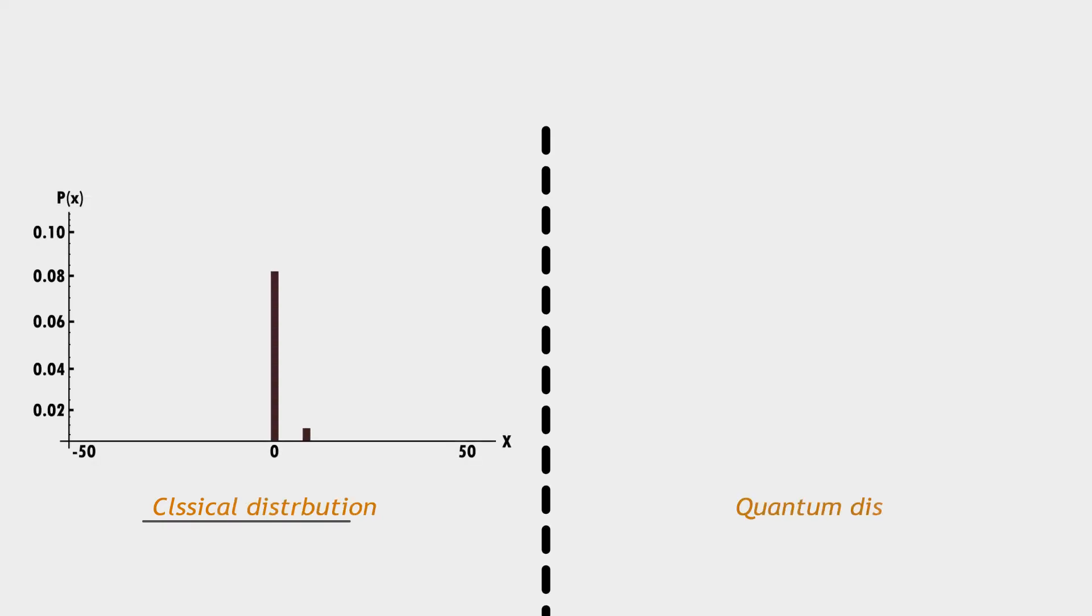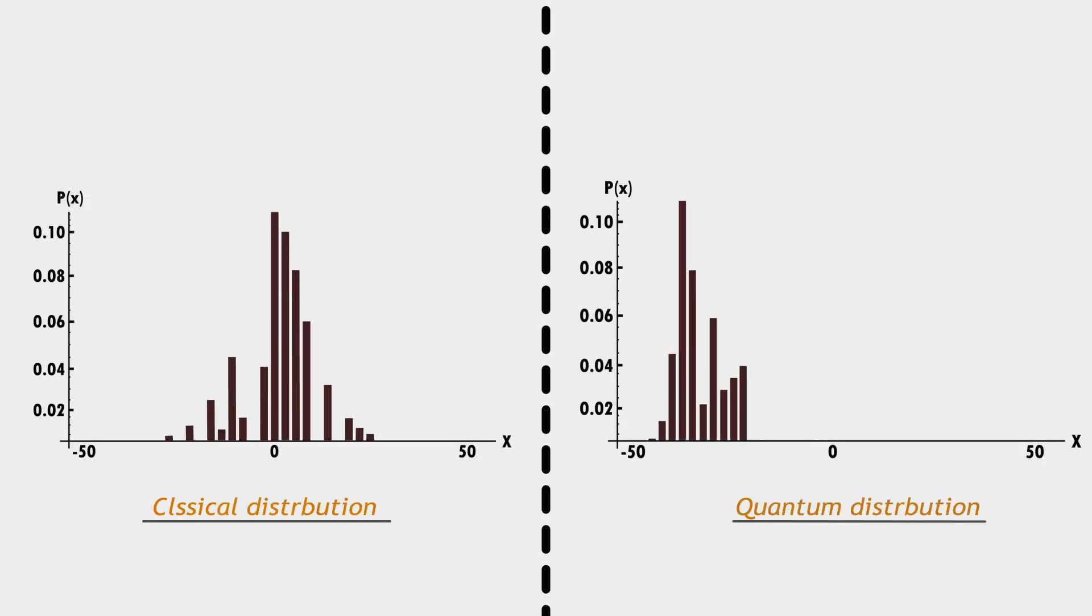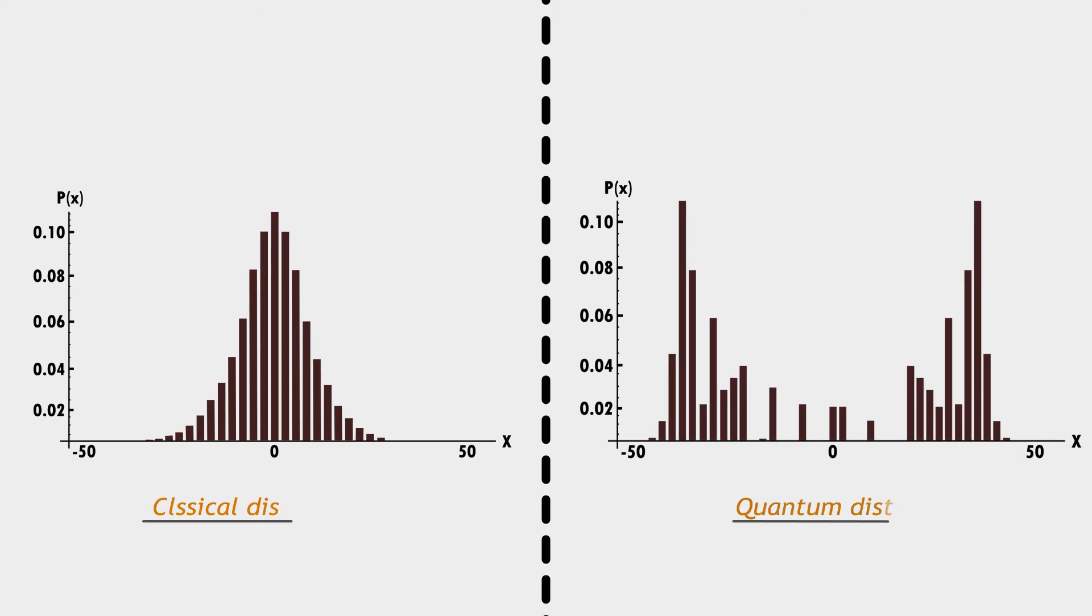Expanding on this, let's consider the case of multiple slits. By comparing the patterns observed in a classical versus quantum detector, we can gain insight into their differences.